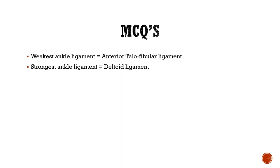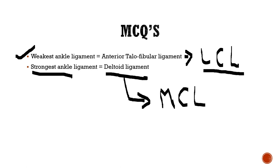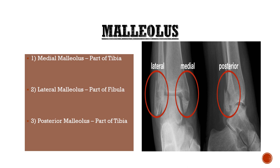For MCQs: the weakest ankle ligament is the anterior talofibular ligament, which is between the talus and the fibula and is part of the lateral collateral ligament. The strongest ankle ligament is the deltoid ligament, also known as the medial collateral ligament.